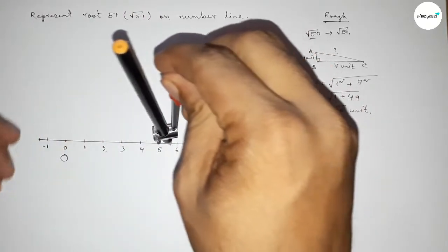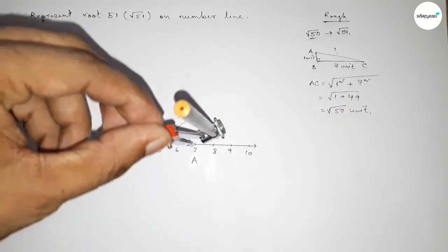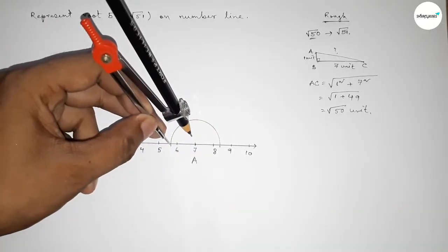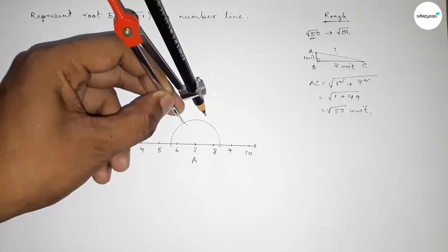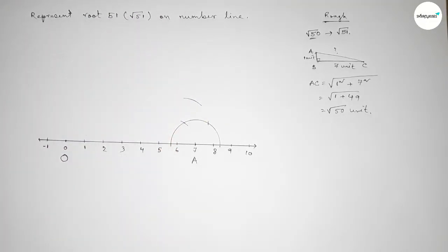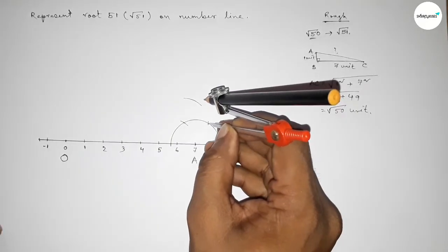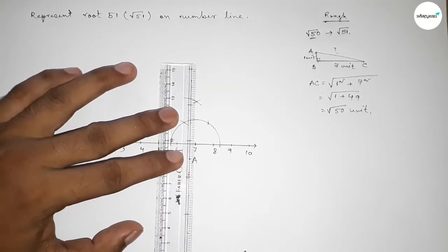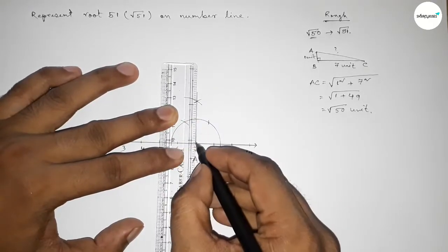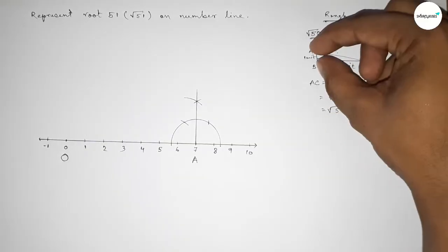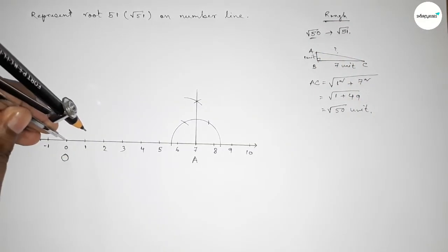Putting the compass here, taking the same length, and cutting an arc. Putting the compass at the new position and cutting again. Drawing an arc with the same length, and where both curves intersect gives the 90-degree direction. Joining this line to get the perpendicular at point A.